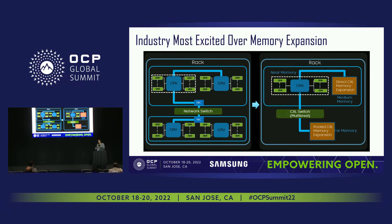What CXL enables with memory expansion is you can use the PCIe or CXL slot to do a local memory expansion — that's the direct CXL memory expansion in the same server. You can also go over a CXL switch, multi-level switches, to reach a pooled CXL memory expansion, which could be from dedicated memory devices connected to switches for pooling, or from other servers.